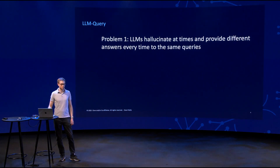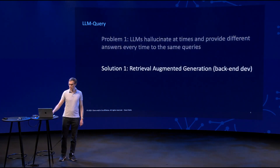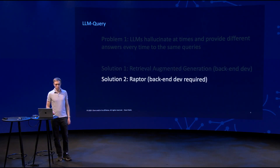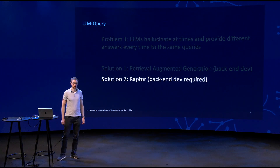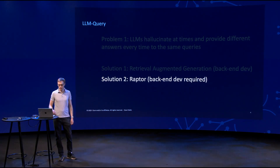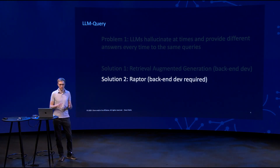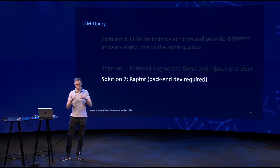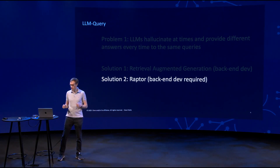The basic problem right now is that LLMs hallucinate and provide different answers every time. Solution one, already mentioned, is retrieval augmented generation. There's also something called Raptor, which is more advanced retrieval augmented generation, where you have some clever summarization made at leaves and clusters, and then a high-level summary as well. Everything is pushed into a vector database model.